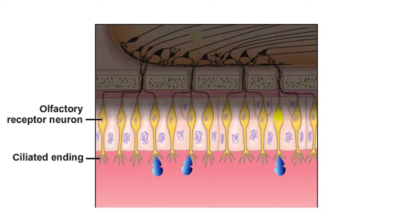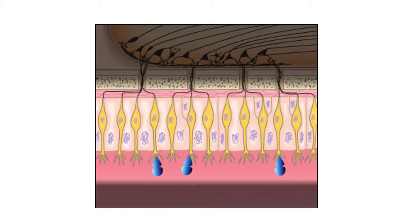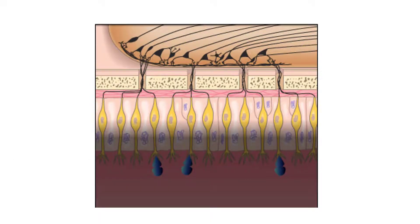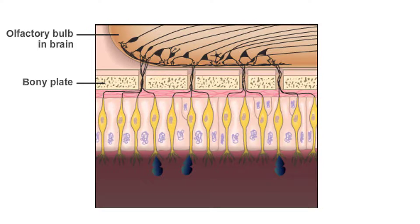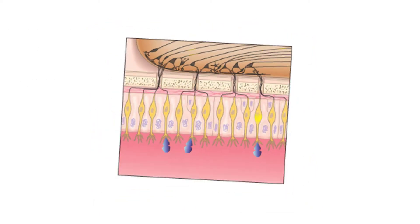The more odorant molecules present, the stronger the action potential. Now notice that the other end of the receptor — the axon — passes through a bony plate and ends directly in the brain. The nerve impulse can travel to one of the two olfactory bulbs in the cerebral cortex of the brain.